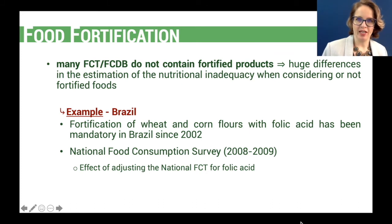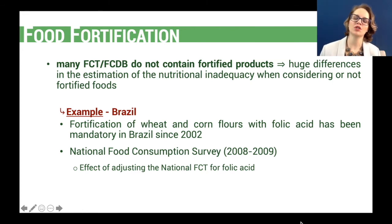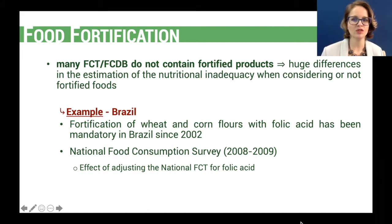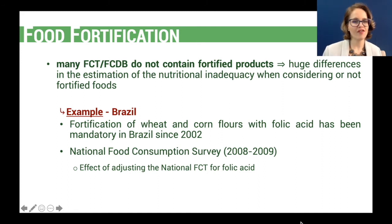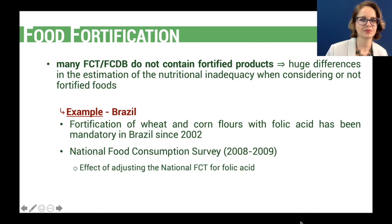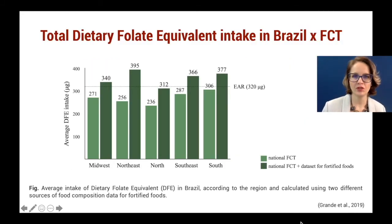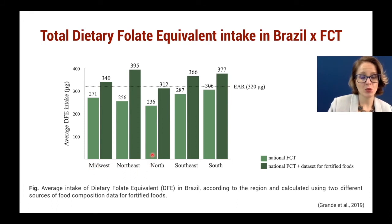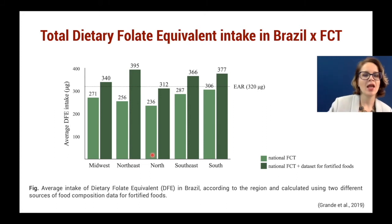My next example is regarding food fortification. Many food composition tables do not contain fortified foods, and this results in huge differences in estimating nutritional inadequacy when we don't consider fortified foods. Taking Brazil as an example: the fortification of wheat and corn flours with folic acid has been mandatory in Brazil since 2002. I used data from the food consumption survey to show the effect of adjusting the national food composition table for the folic acid content of fortified flours. I calculated the total dietary folate equivalent intake in Brazil using two different food composition tables.